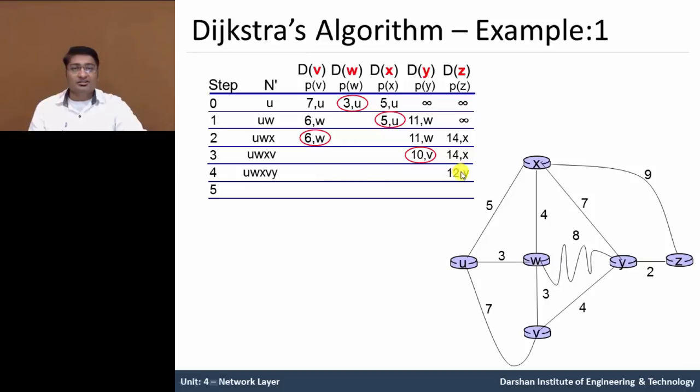Now the last node, least cost 12y. Here 3 plus 3 plus 4 plus 2, total we have used 3 plus 3 plus 4 plus 2 equivalent 12. This is least cost value, and now z is known. So u, w, x, v, y and z, all nodes are known. So routes are decided and it is established using this algorithm.